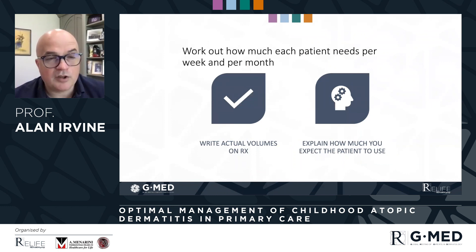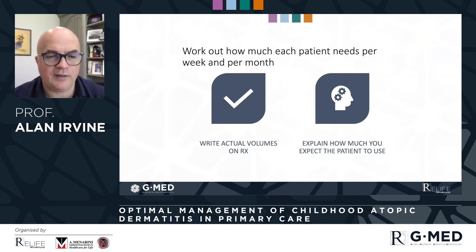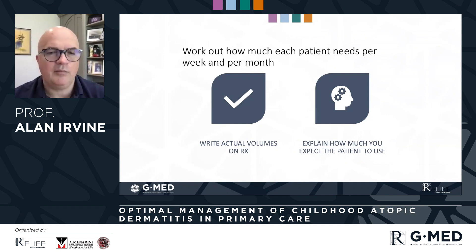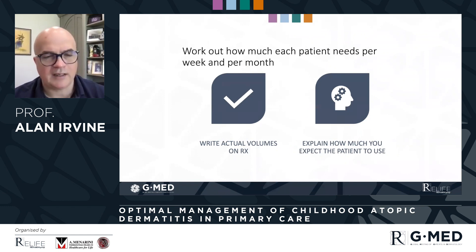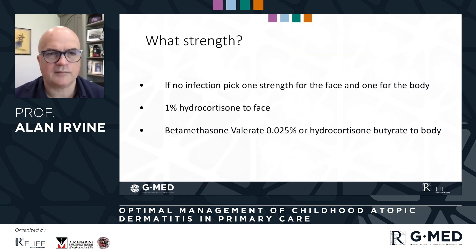It's important to prescribe the right amount. Work out how much each patient needs based on their size. You can measure out with your hands how many fingertip units they need, explain to the parents or the patient how much they need to use, and write the actual volumes on the prescription. That's really important to get good results.